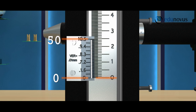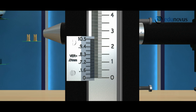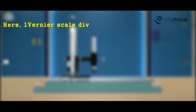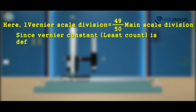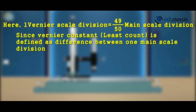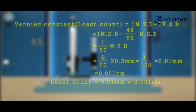To find the least count of the traveling microscope: 50 divisions of vernier scale equals 49 divisions of the main scale, so one vernier scale division equals 49/50 main scale divisions. Least count = 1 MSD − 1 VSD = 1 − 49/50 = 1/50 main scale divisions = 0.01 mm, which is 0.001 centimeters.